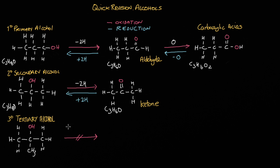Moving on to tertiary alcohols — tertiary alcohols do not readily undergo oxidation. The reason for this is that the carbon to which the OH is attached has no hydrogens directly on it, so there are no hydrogens we can remove from that carbon. Whereas in the secondary and primary alcohols, hydrogens were available to be removed. That's the reason why tertiary alcohols cannot be oxidised readily.